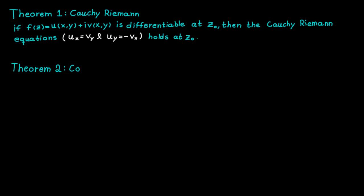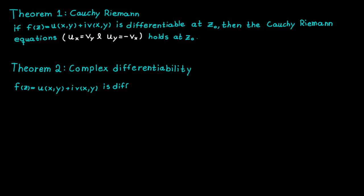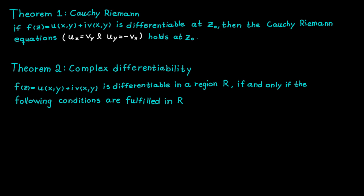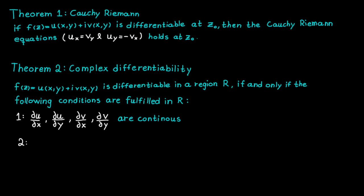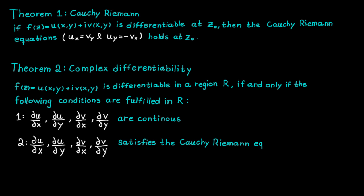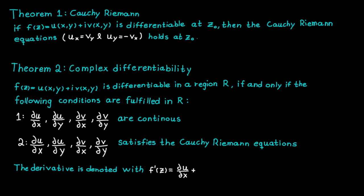That is why we will continue with another theorem about complex differentiability, which states that a function is differentiable in a region R if and only if the following conditions are fulfilled in the region R. The first condition is that all the partial derivatives of the functions u and v must be continuous. The second condition is that the partial derivatives must satisfy the Cauchy-Riemann equations. If these two conditions are true, then the function is differentiable in this region, and the derivative is denoted with a prime as usual.